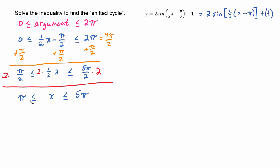So we know that our graph is going to start at an x value of pi and end at an x value of five pi. This is where you can verify the period: we found the period was four pi above, and five pi minus pi is four pi, so the period is confirmed.